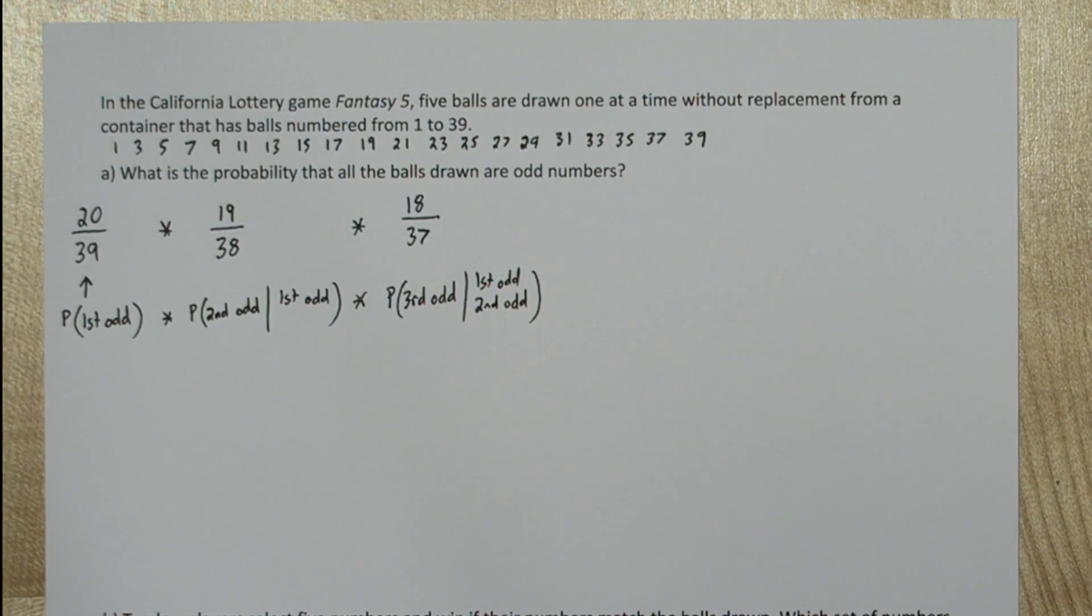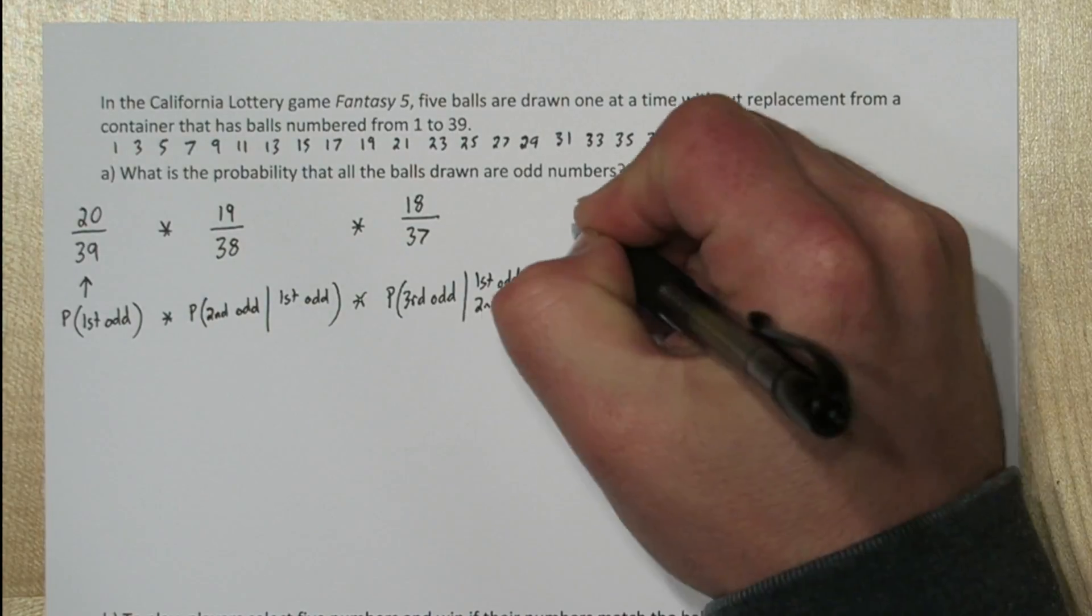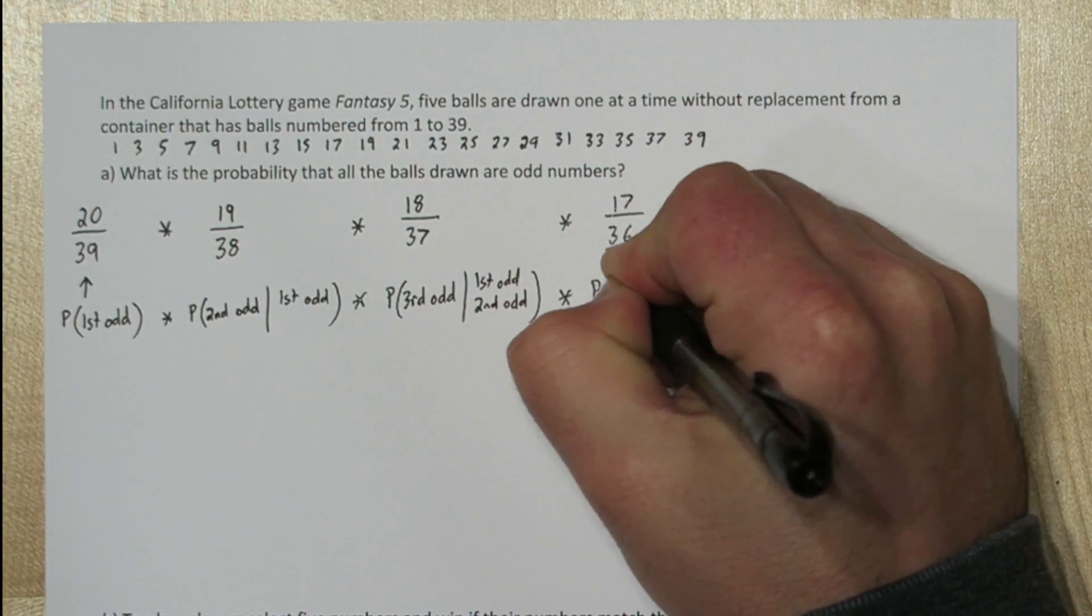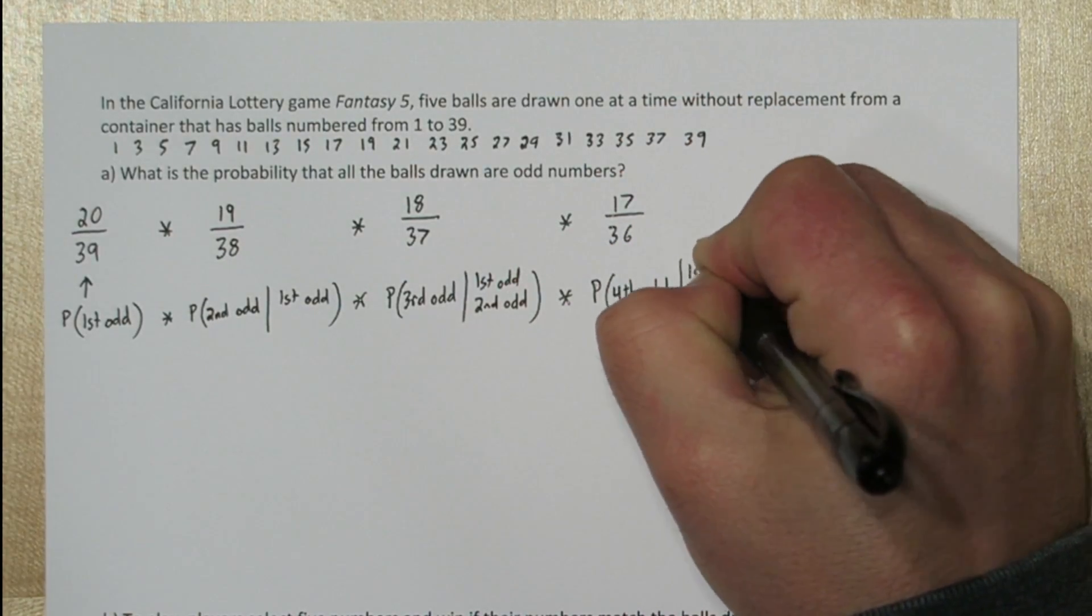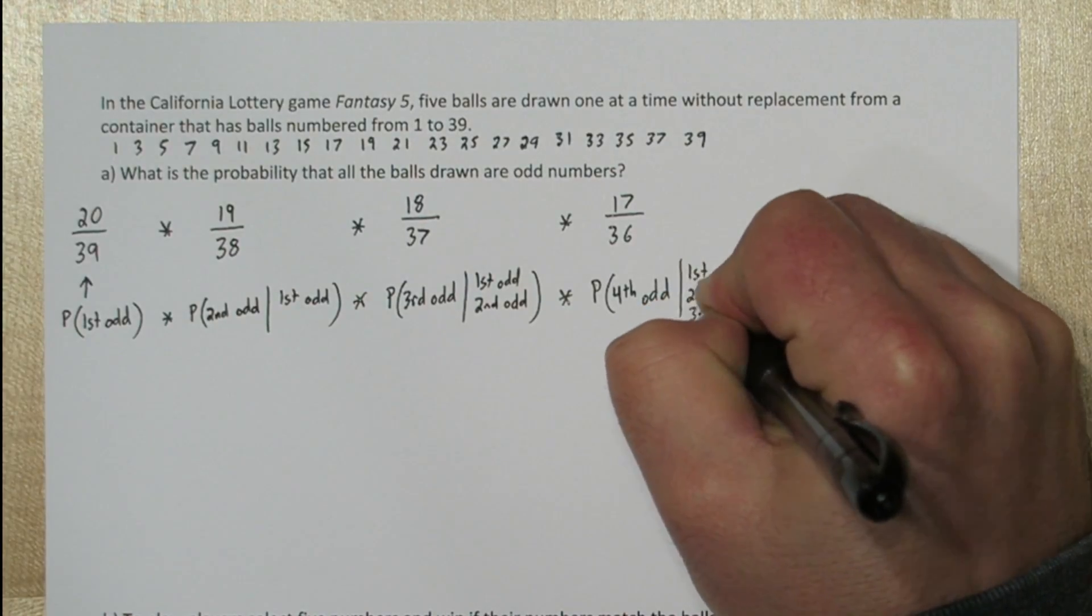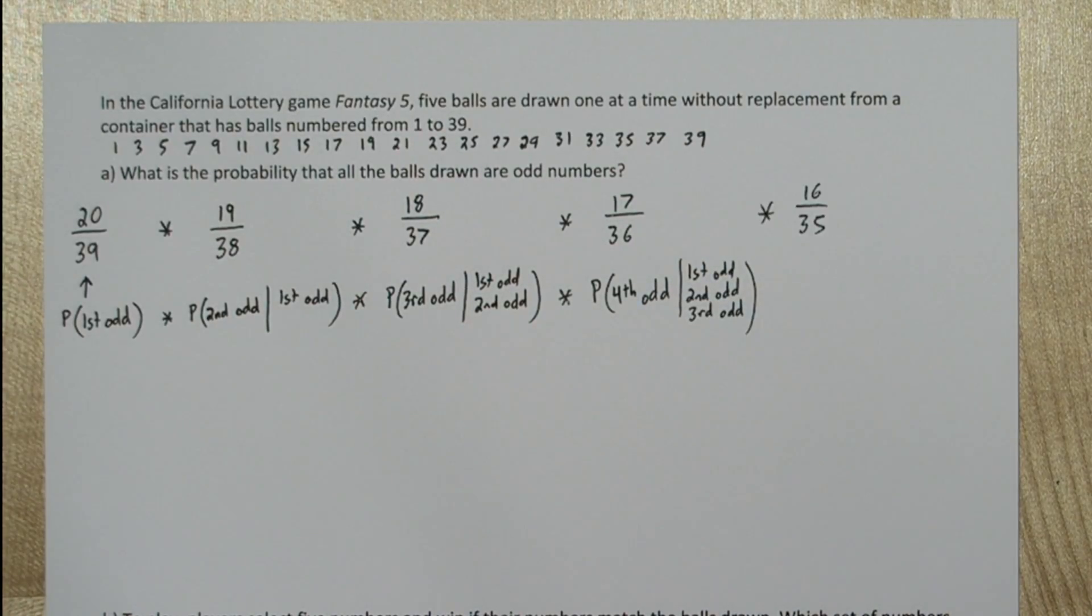Once those three odd numbers have been removed, there's only 17 left, out of a total of 36 numbers. So the probability the fourth number is odd, given the first, second, and third were already odd, is 17 over 36.